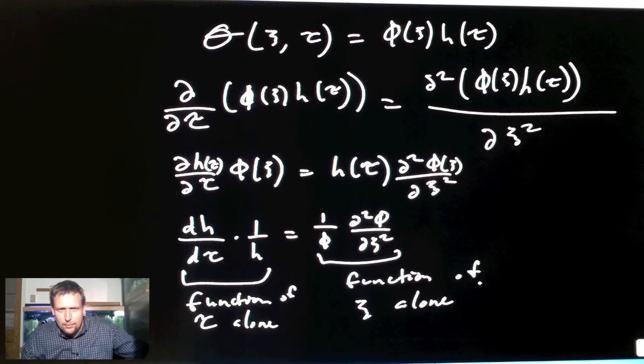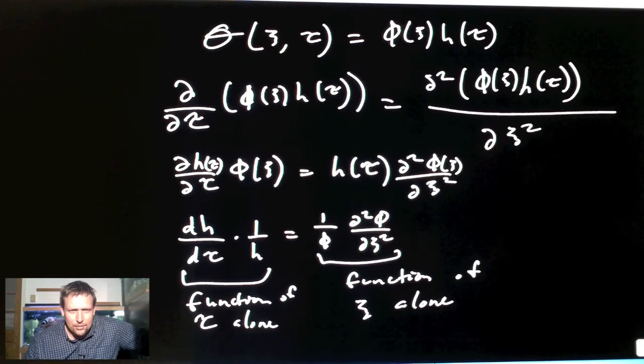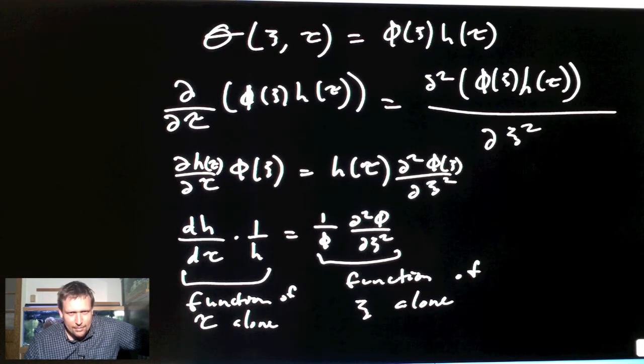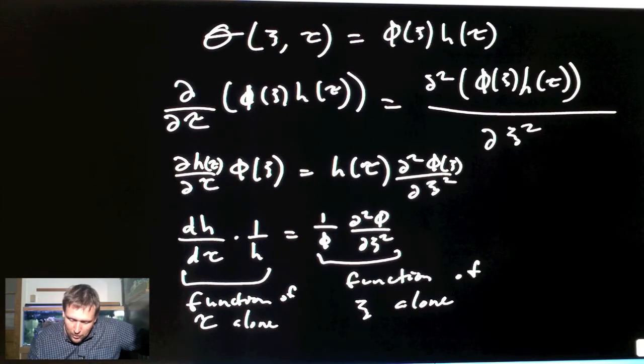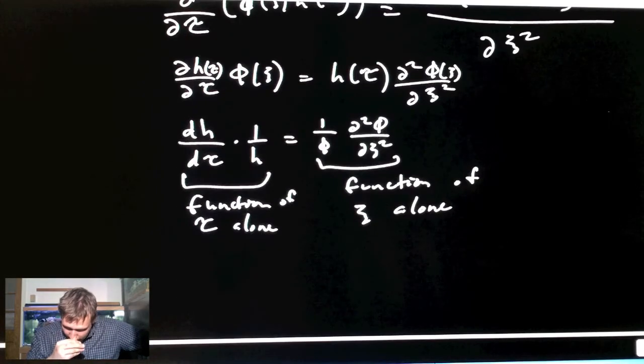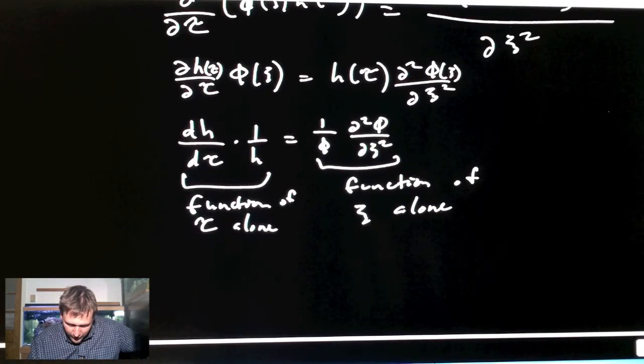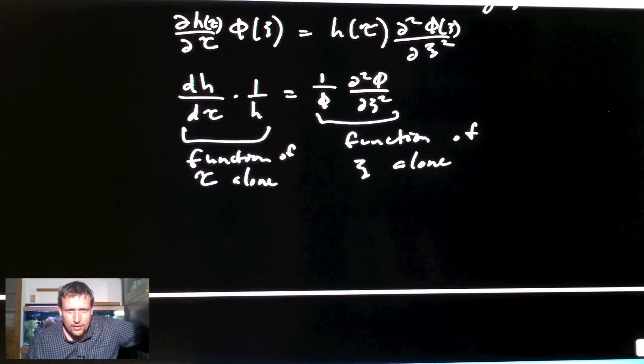When is this ever going to be true? You have something that has a completely different dependence on variables. The only occurrence where this equality will hold is if they're both equal to a constant.